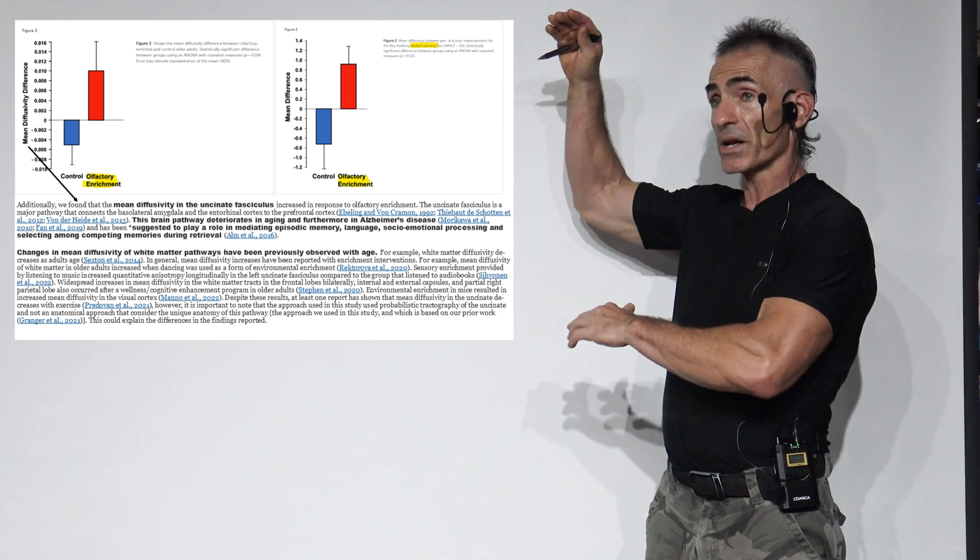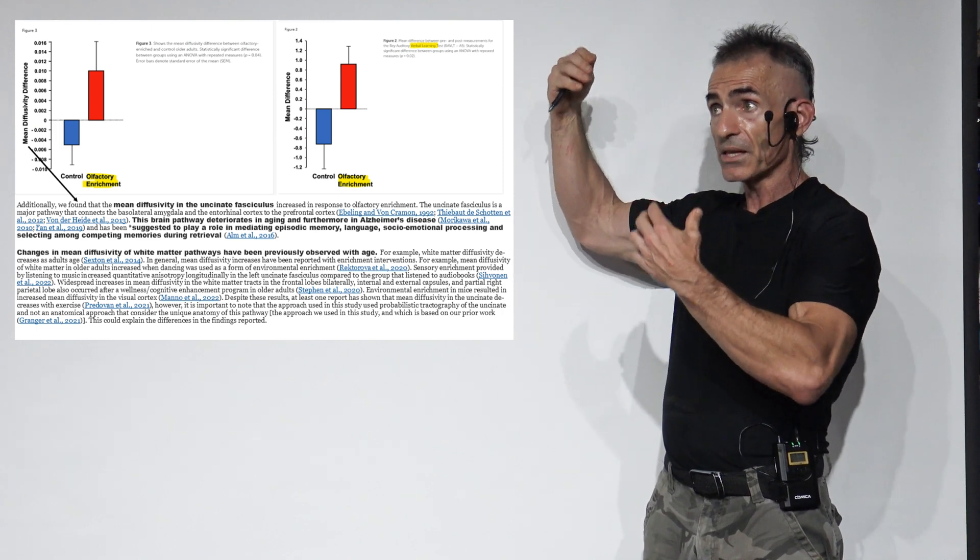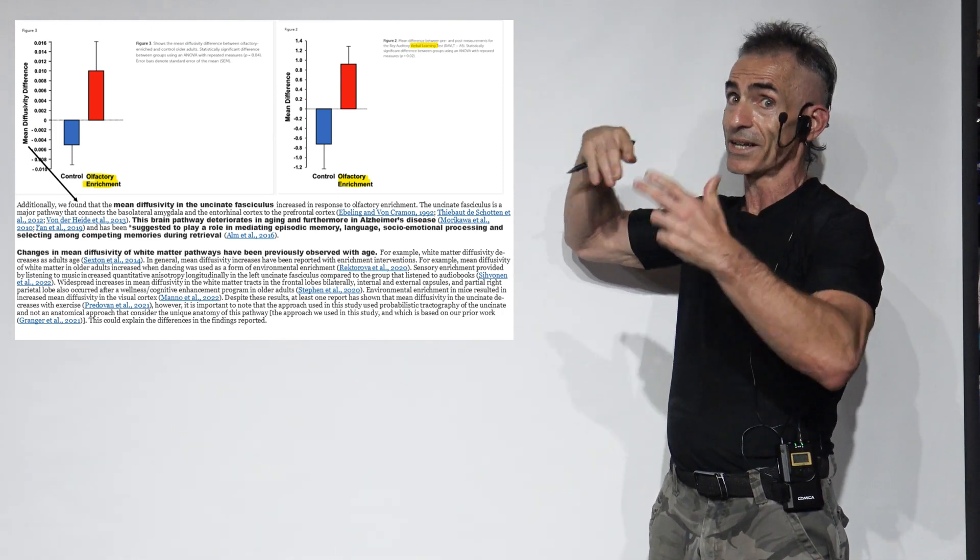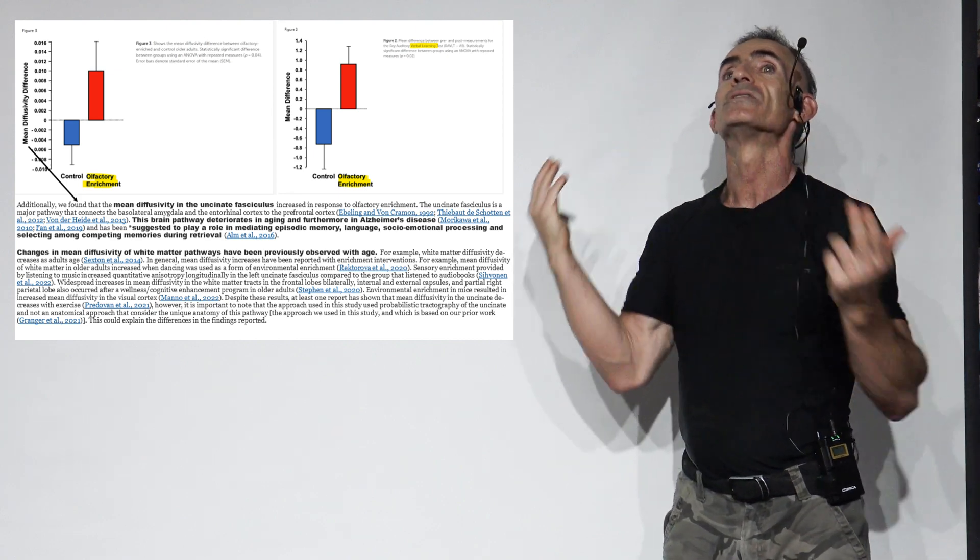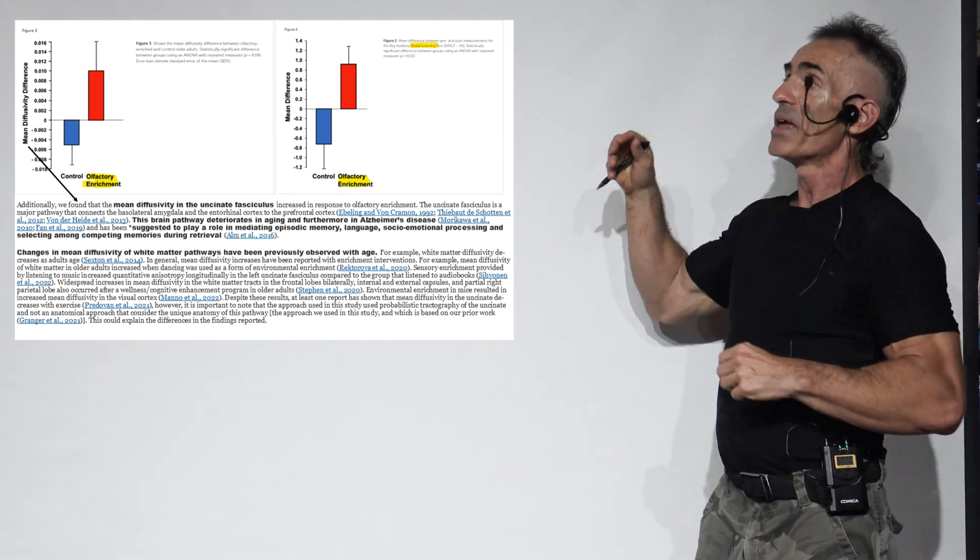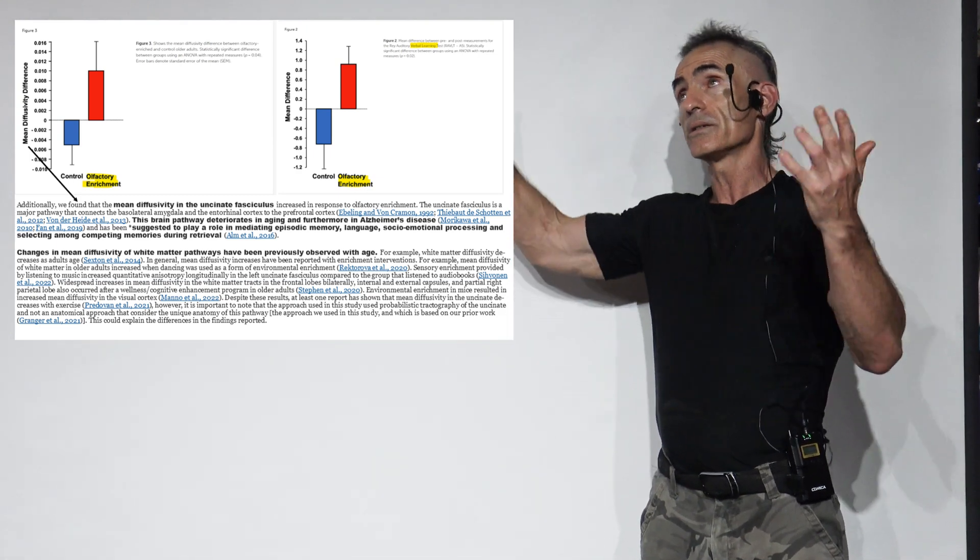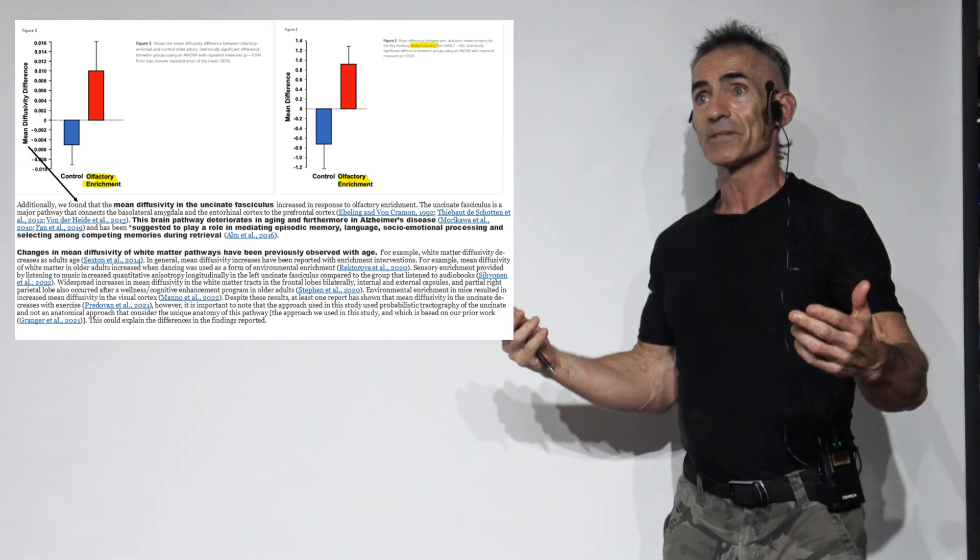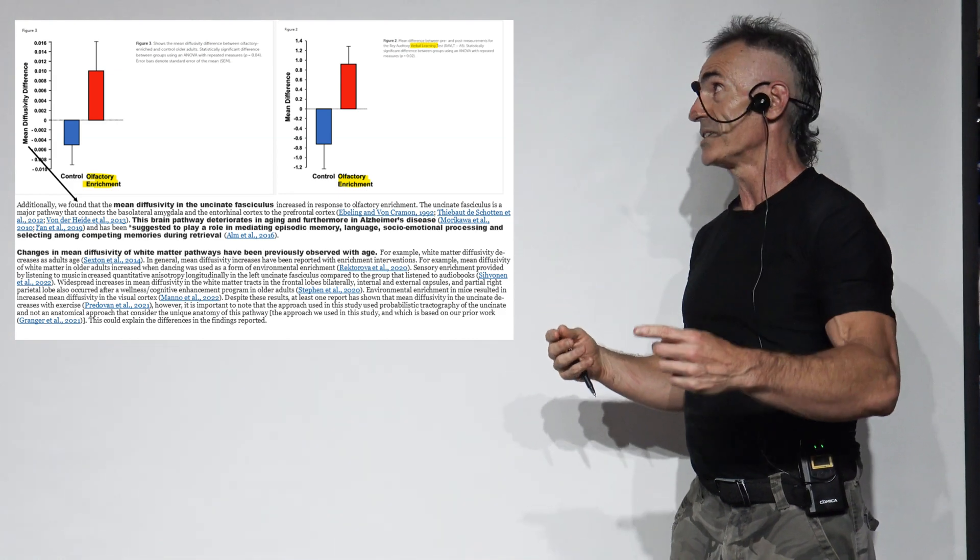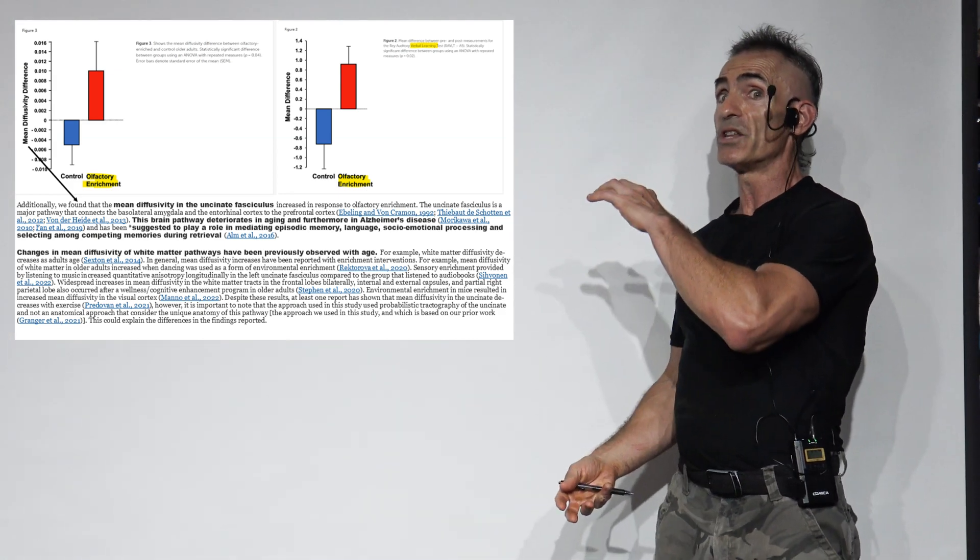You see the big red line - that's the people smelling the essential oils. Then you have the uncinate fasciculus, which sounds complex but I'll explain more in a second. You see that incredible benefit in diffusivity, and that's amazing.